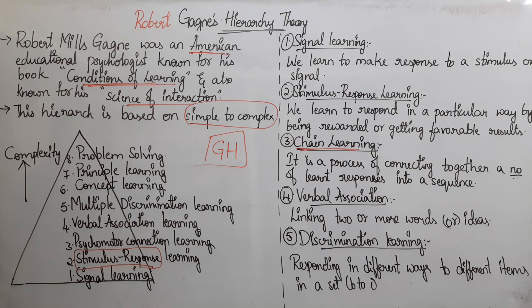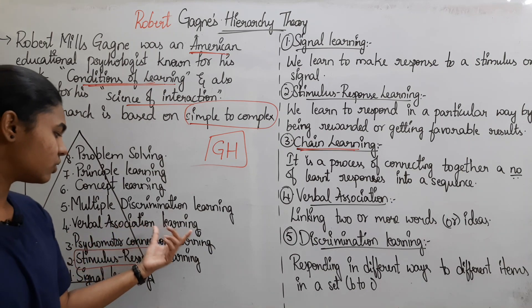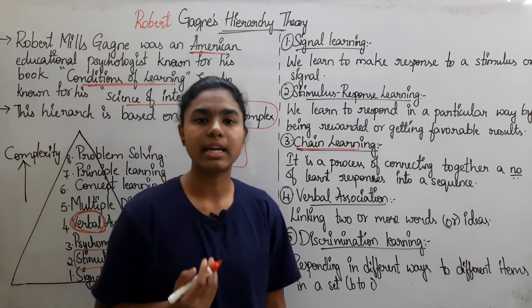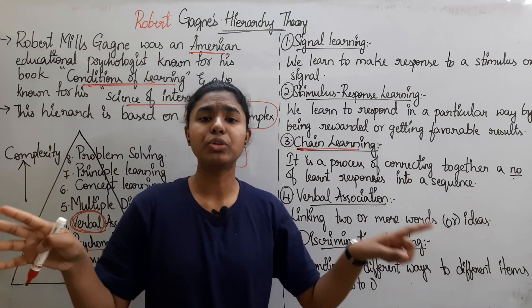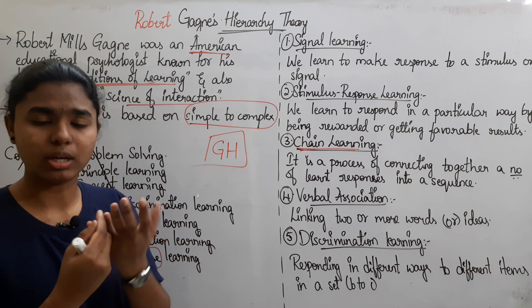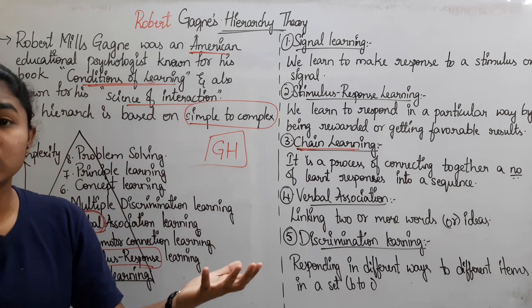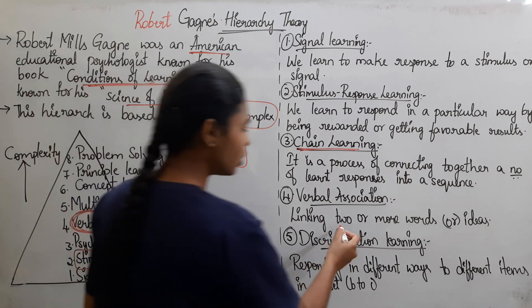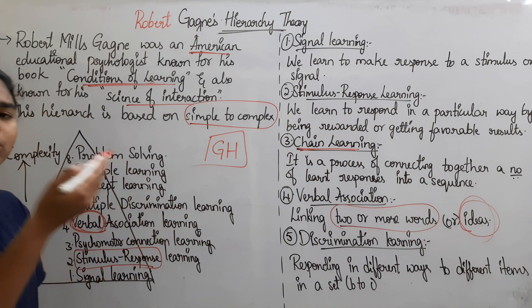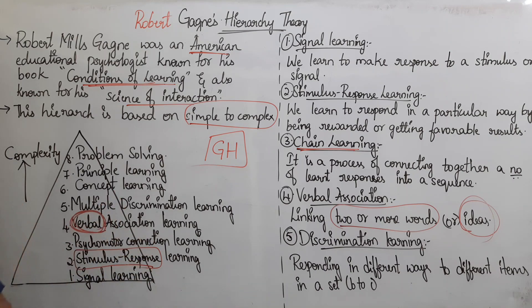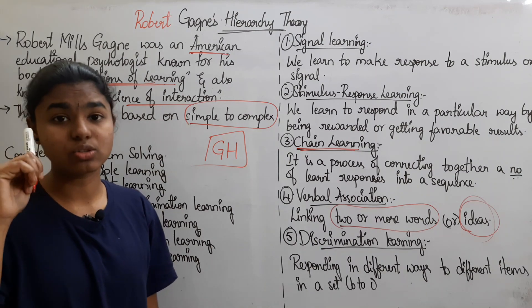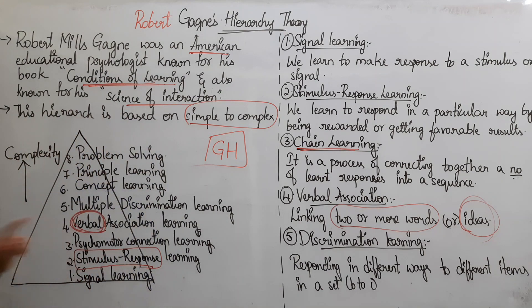Next is Verbal Association Learning. In this stage, we arrange and join words together, connecting word to word. We link two or more words or ideas — associating multiple topics. This is the fourth level of learning.